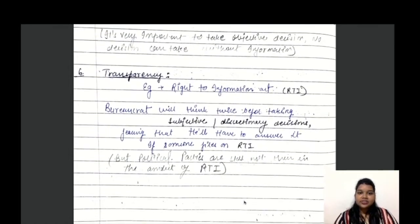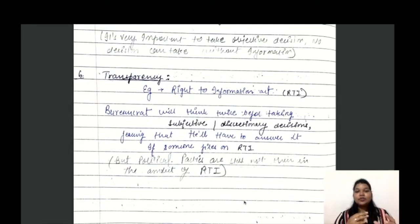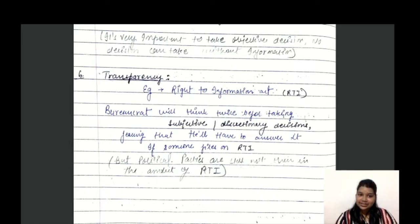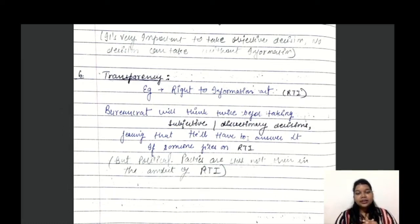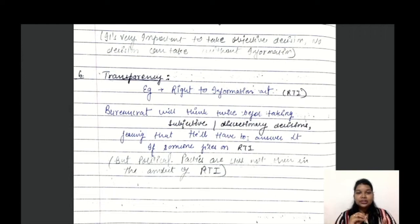The sixth factor is transparency, which can be maintained between the government and the public through the Right to Information Act. The RTI Act is the best example of transparency — bureaucrats will think twice before taking subjective or discriminatory decisions, knowing they may have to answer if someone files an RTI. This obligation to maintain transparency discourages subjective or discriminatory decisions.